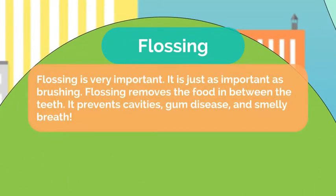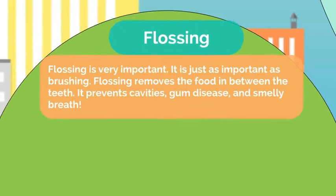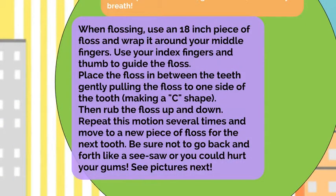Flossing. Flossing is very important — it is just as important as brushing. Flossing removes the food in between the teeth. It prevents cavities, gum disease, and smelly breath. When flossing, use an 18-inch piece of floss about the length of your arm and wrap it around your middle fingers. Use your index fingers and your thumbs to guide the floss. Place the floss in between the teeth and gently pull the floss to one side of the tooth, making a C shape. Then rub the floss up and down. Repeat this motion several times and move to a new piece of floss for the next tooth. Be sure not to go back and forth like a seesaw or you could hurt your gums. See the pictures next to demonstrate.